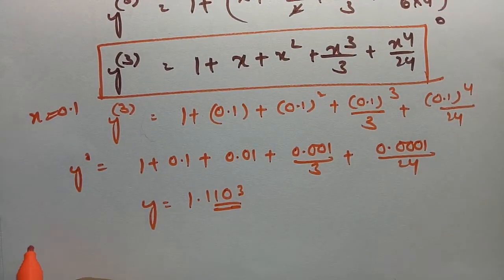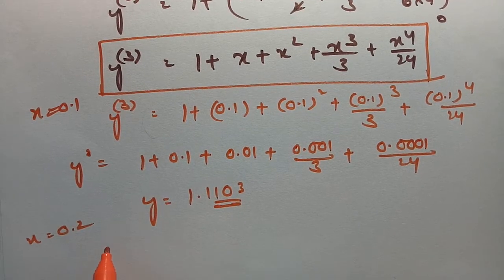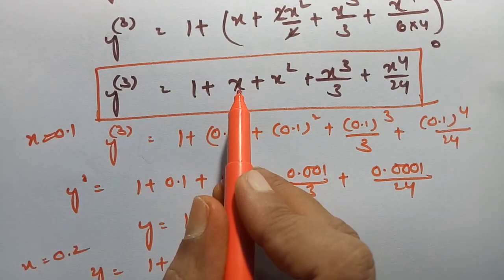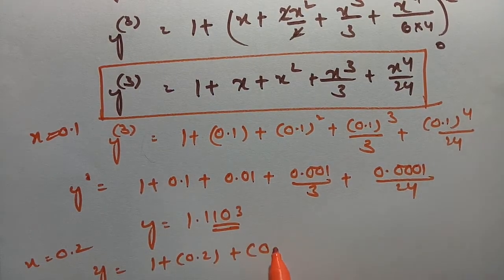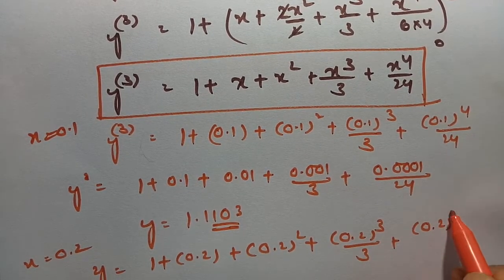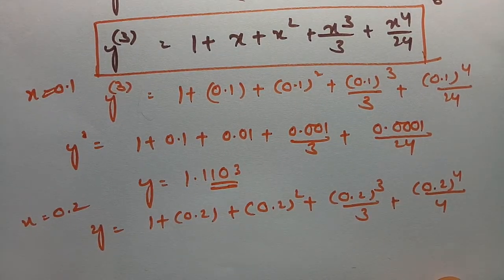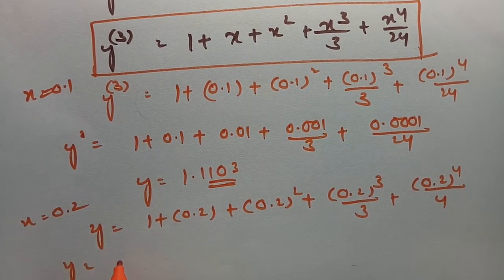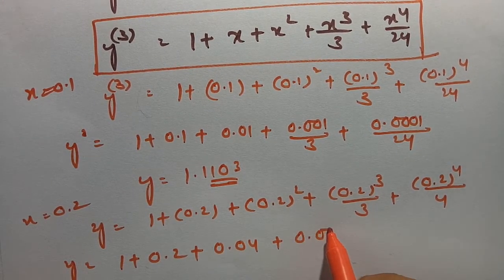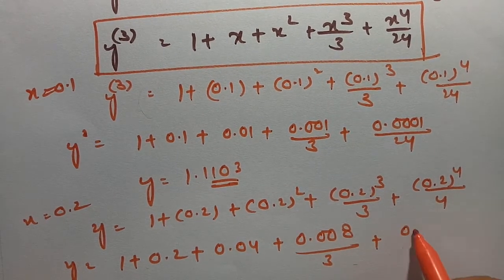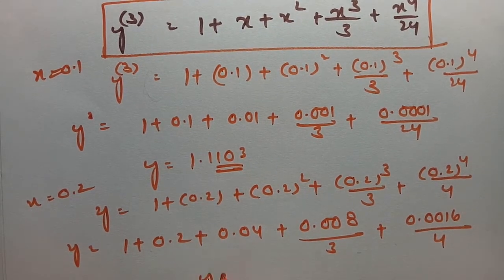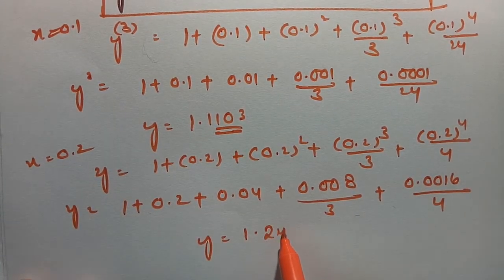You can use your calculator. For x = 0.2: y = 1 + 0.2 + (0.2)²/2 + (0.2)³/3 + (0.2)⁴/4. Expanding: 1 + 0.2 + 0.04/2 + 0.008/3 + 0.0016/4. Calculating gives y ≈ 1.2427.